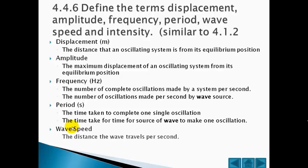The wave speed is the distance the wave travels per second. Intensity is the power output per unit area and is related to the amplitude squared.